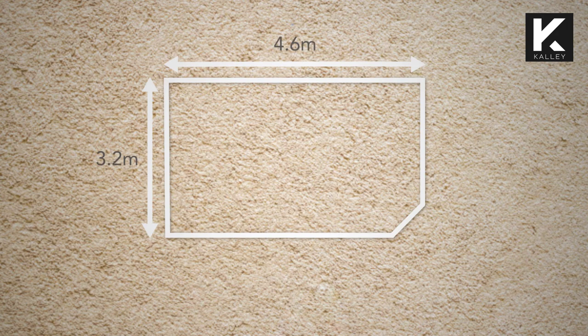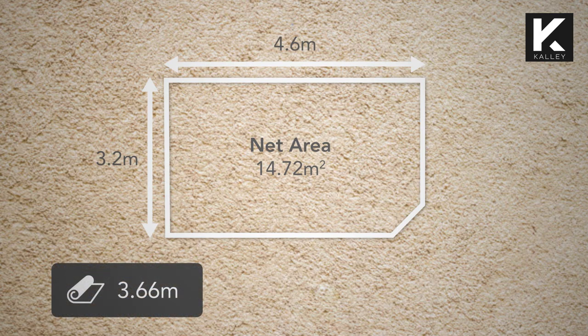For example, if a room is 3.2 metres by 4.6 metres, the net area is 14.72 metres squared. When you have a 3.66 metre carpet in this room, the calculations are relatively simple.